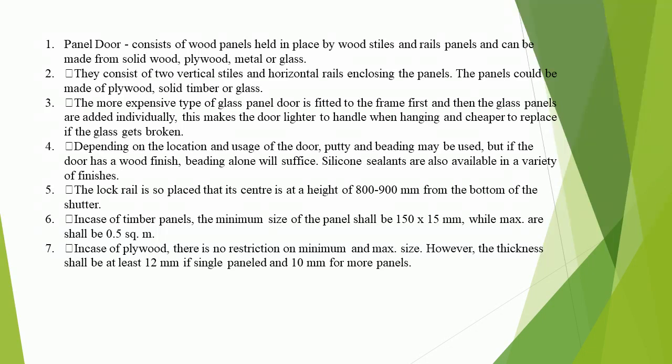In case of timber panels, the minimum size of the panel shall be 150 x 15 mm, while the maximum area shall be 0.5 square meters. In case of plywood, there is no restriction on minimum and maximum size; however, the thickness shall be at least 12 mm if single-paneled and 10 mm for more panels.